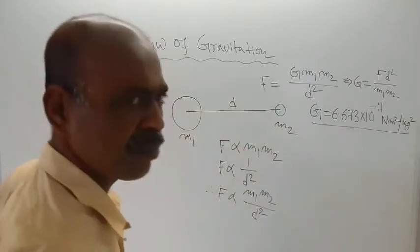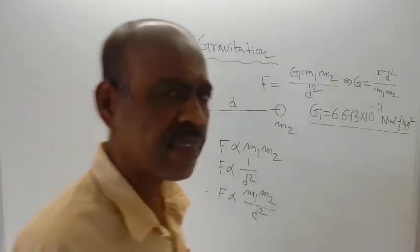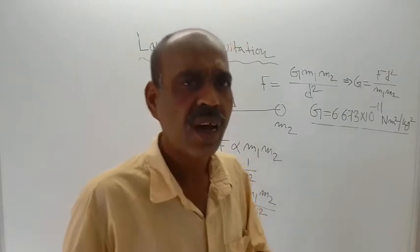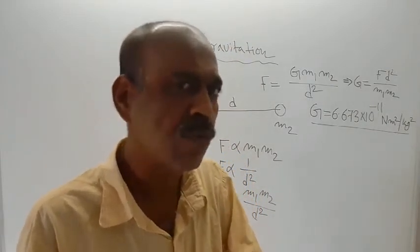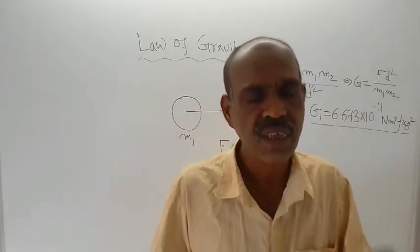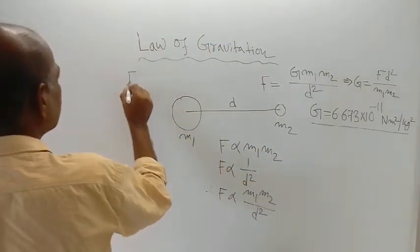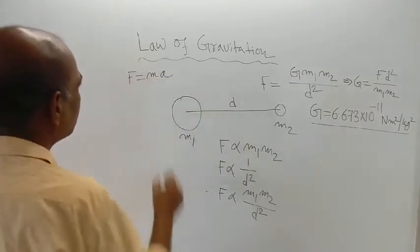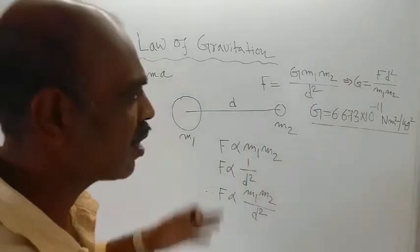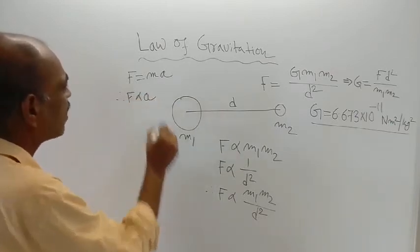Since the force of attraction is the same on both objects, and from Newton's second law of motion, force equals mass times acceleration (F = MA), if mass is held constant, then force is proportional to acceleration. So acceleration A equals F divided by M.